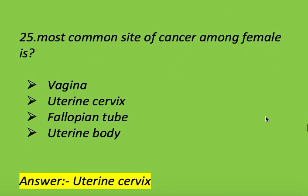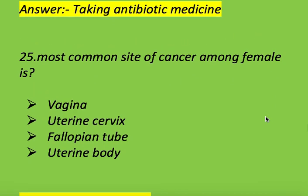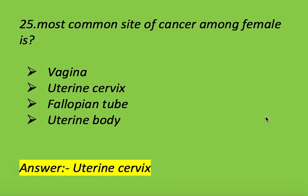Next question: what is the most common site of cancer among females? Options: vagina, uterine cervix, fallopian tube, and uterine body. Right answer is uterine cervix. Uterine cervix is the most common site of cancer among females.